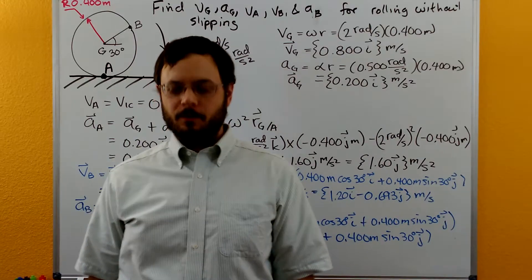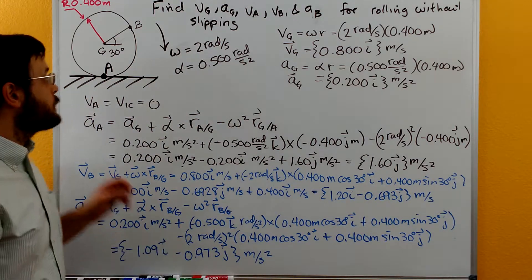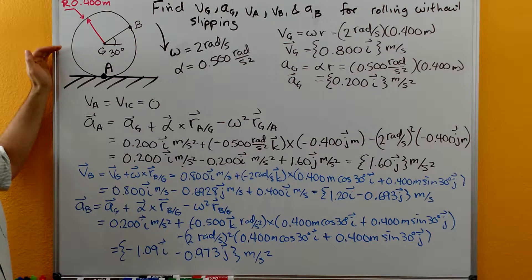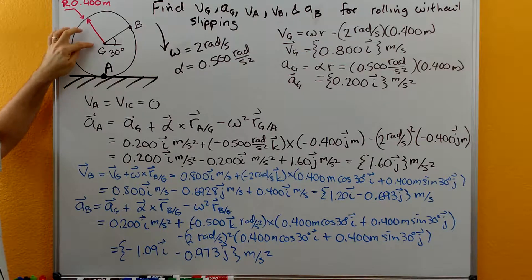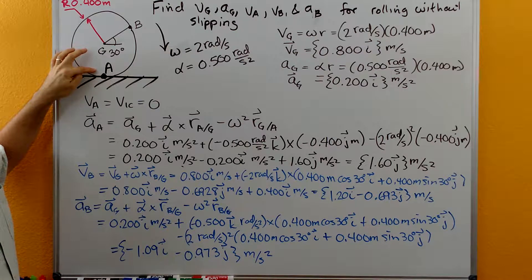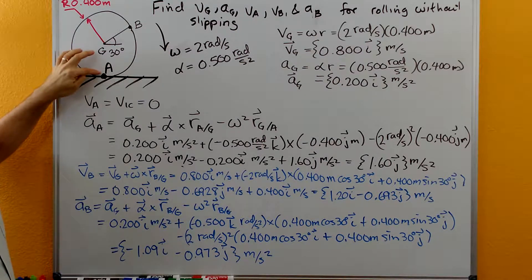Hi, welcome to the Dynamics Tutorials. For this problem we have a wheel that's rolling without slipping. The center of gravity here is G. The point where it contacts the surface is A. This is the point where it's rolling without slipping.